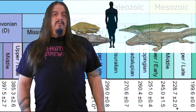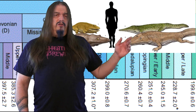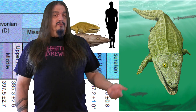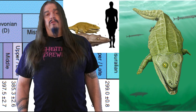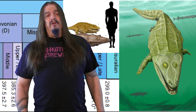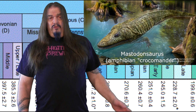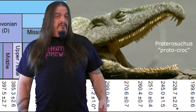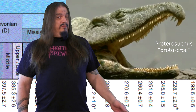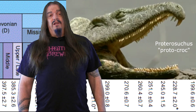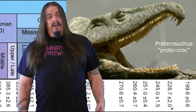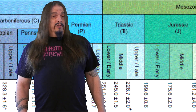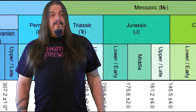The same goes for crocomanders — those giant crocodile-like amphibians like Mastodontosaurus — which also made it through the Permian extinction. There still weren't any actual crocodiles yet, but the ancestors and cousins of crocodiles were already looking an awful lot like that, and they soon proved to be too much to compete against.